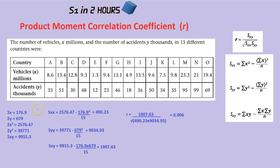I'm going to quickly go through how you might work each one out, but in the exam question they likely will give you one, two, three, four, or maybe all of these numbers. They might just give you these numbers so you would then have to put them into these formulas and work out the final result. I'm going to pretend like they've given us nothing, but in the exam they might give you some of these totals so you don't have to work them out yourself.